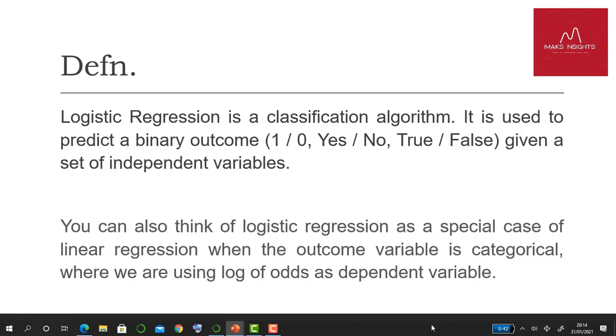Logistic regression is a classification algorithm used to predict discrete or binary outcomes where it's a one or a zero, a yes or a no, true or false, from a given set of independent variables. You can also think of logistic regression as a special case of linear regression where the outcome variable is categorical, or where we're using log of odds as a dependent variable.